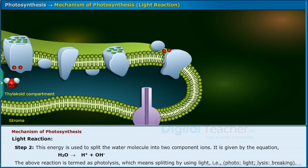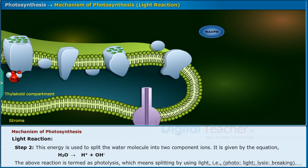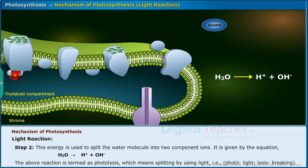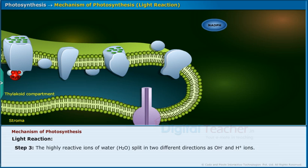Step 2: This energy is used to split the water molecule into two component ions. It is given by the equation shown on the screen. The above reaction is termed as photolysis, which means splitting by using light — that is, photo meaning light, and lysis meaning breaking.